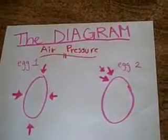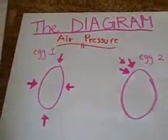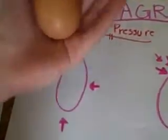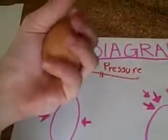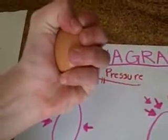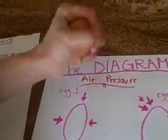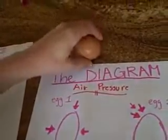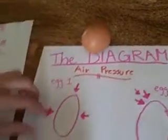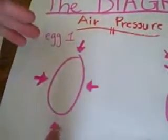For our first experiment, Egg Under Pressure — this is the diagram. Egg 1: when holding an egg and applying equal pressure to all sides of the egg and squeezing as hard as you can, the egg won't break because there's equal air pressure on all sides of the egg pushing against each other, so there's no uneven spots.